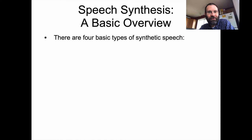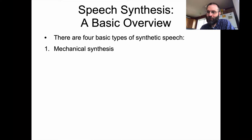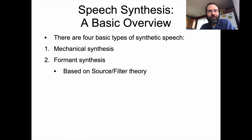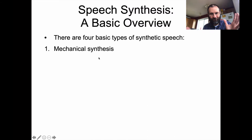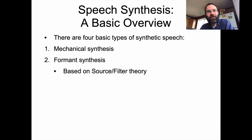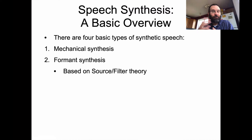There are four basic types of synthetic speech. The first, which is impractical and not commonly used, but was the first kind of synthetic speech, is called mechanical synthesis — using a machine or device that is not electronic to produce synthetic speech. The second kind is formant synthesis, which is based on source-filter theory, where you produce an electronic sound as the source and then apply filters to make it sound like speech.